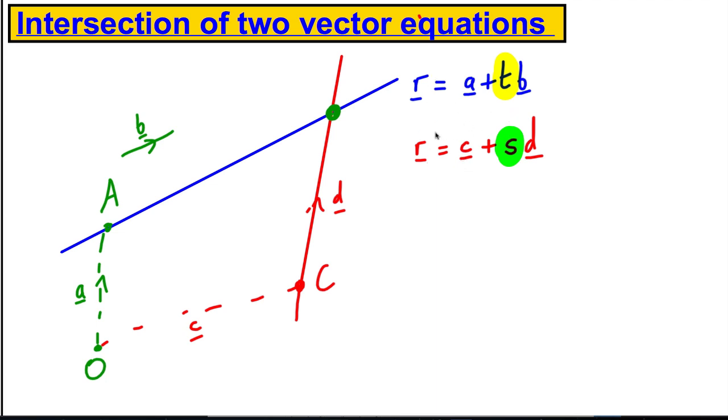Now if they meet, then there is some T and some s that, if we could find, if they did meet, that would make their coordinates or values the same. For a particular T and a particular s, it may be the case that the coordinates are the same. Alternatively, we may be able to find no T or no s where the position vectors are the same, in which case they don't intersect.